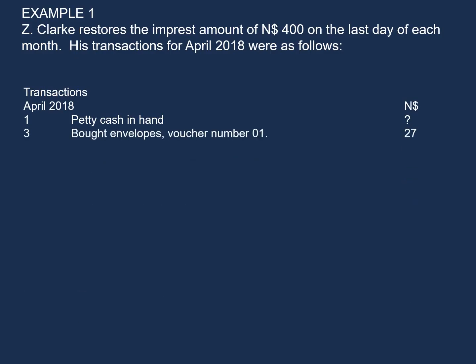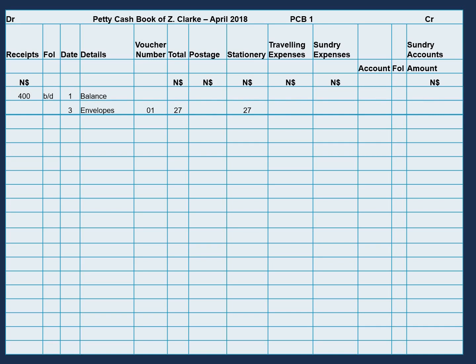On the 3rd, bought envelopes, voucher number 01, for $27. In our date column we write 3, in our details column we write envelopes, our voucher is 01, the total is $27, and we will group this expense under stationery because envelopes is part of our stationery expenses. We also enter this on the credit side of the petty cash book because money is flowing out from our petty cash.